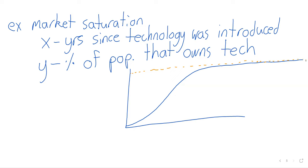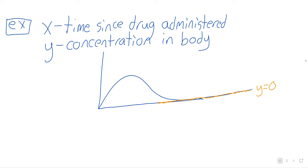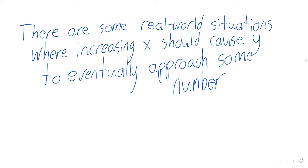And again, what we're seeing graphically is that in this situation, the curve is approaching some horizontal line. Well, this might be a property that a lot of real world functions have, but it's not a property that linear functions have or quadratic functions have or polynomials have. So if you want to look at market saturation or drug concentration, none of those types of functions can be the way to go.